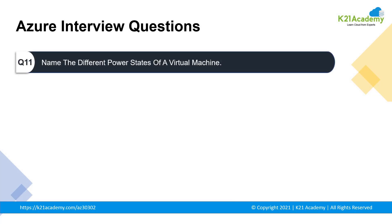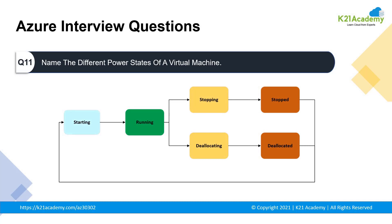Our eleventh question is: do you have any idea about the power states of a virtual machine? This question is asked to check advanced concepts of virtual machines. There are six power states in total. Starting — indicates the VM is being started. Running — indicates the VM is running. Stopping — indicates the VM is being stopped. Stopped — indicates the VM is stopped. Deallocating — indicates the VM is being deallocated. Deallocated — indicates the allocation is already done.